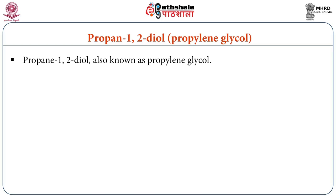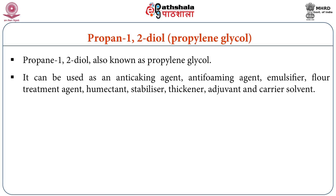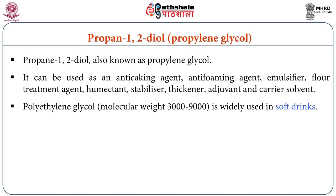Another ingredient is propane-1,2-diol, also known as propylene glycol. Propylene glycol can be used as an anti-caking agent, emulsifier, flow treatment agent, humectant, stabilizer, thickener, and carrier solvent. Importantly, it also acts as an anti-foaming agent. This anti-foaming agent possesses a molecular weight of around 3000 to 9000 and is widely used in soft drinks.